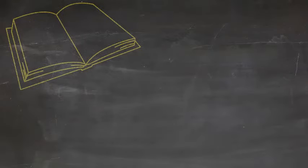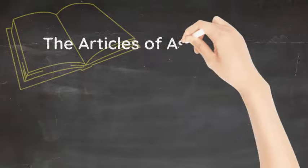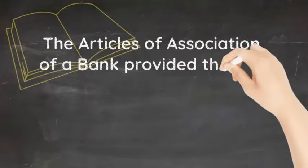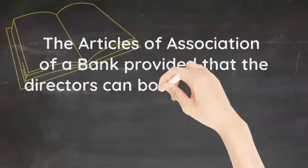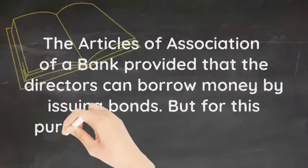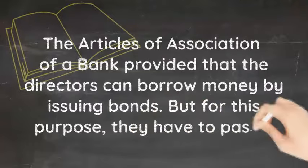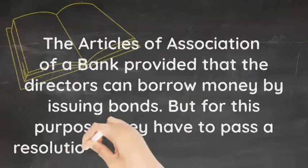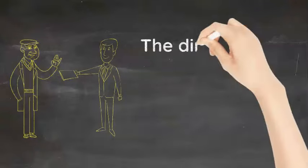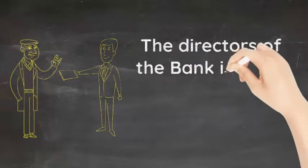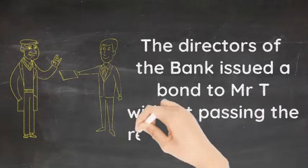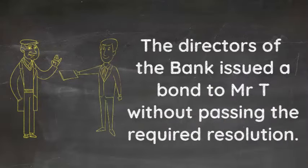Let us discuss the case. The articles of association of a bank provided that the directors can borrow money by issuing bonds. But for this purpose, they had to pass a resolution at the general meeting. The directors of the bank issued a bond to Mr. T without passing the required resolution.